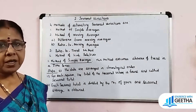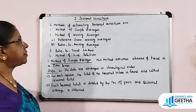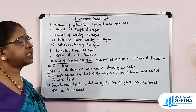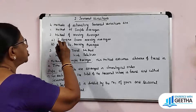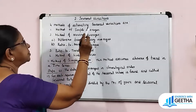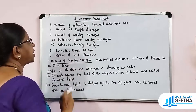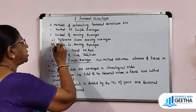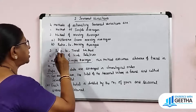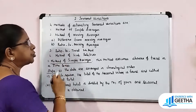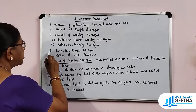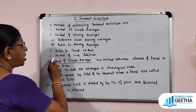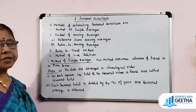Now, how do we measure seasonal variations? There are four methods of estimating seasonal variations. First, method of simple averages. Second, method of moving averages — which has two variants: difference from moving averages and ratio to moving averages. Third, ratio to trend method. Fourth, method of link relatives.